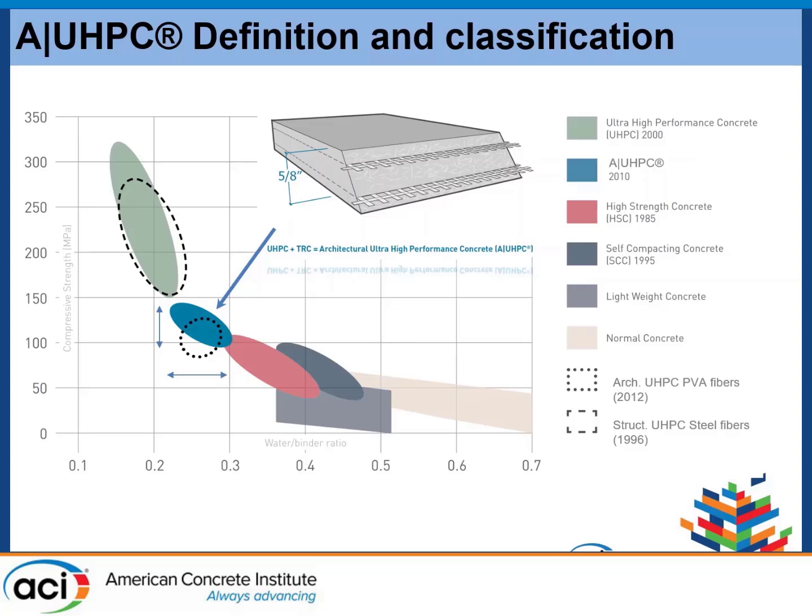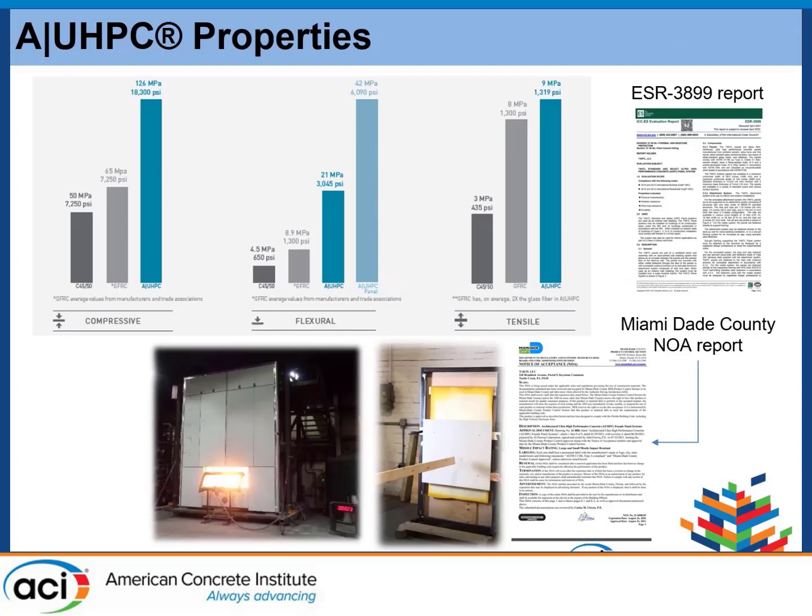If you take a UHPC matrix reinforced with glass fibers and replace them with steel fibers, you move into the 150 MPa compressive strength range — the fiber type influences the compressive strength response. In terms of our material properties: compressive strength is about 126 MPa, flexural strength of the panel is about 46 MPa, the matrix flexural strength is around 16 to 21 MPa, and tensile strength is around 9 MPa.